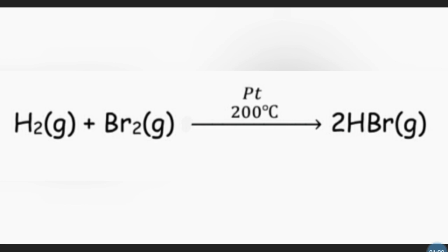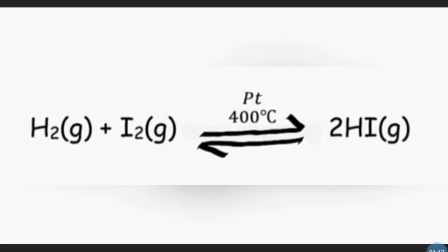In industry, hydrogen bromide gas is produced using a platinum catalyst at a temperature around 200 degrees Celsius. Iodine and hydrogen only combine partially even on constant heating. An equilibrium is set up between hydrogen, iodine, and hydrogen iodide gas. In industry, decomposition of hydrogen iodide to give hydrogen gas is done with a platinum catalyst at about 400 degrees Celsius.